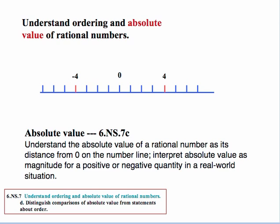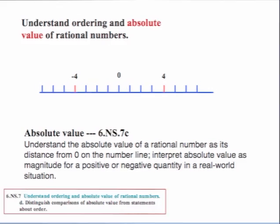Let's look at the idea of absolute value. This actually occurs right before this standard in standard 6.NS.7C. And it states: Understand the absolute value of a rational number as its distance from zero on the number line. Interpret absolute value as magnitude for a positive or negative quantity in a real-world situation. So basically, what this is saying is that absolute value simply refers to the distance from zero, regardless of the direction.